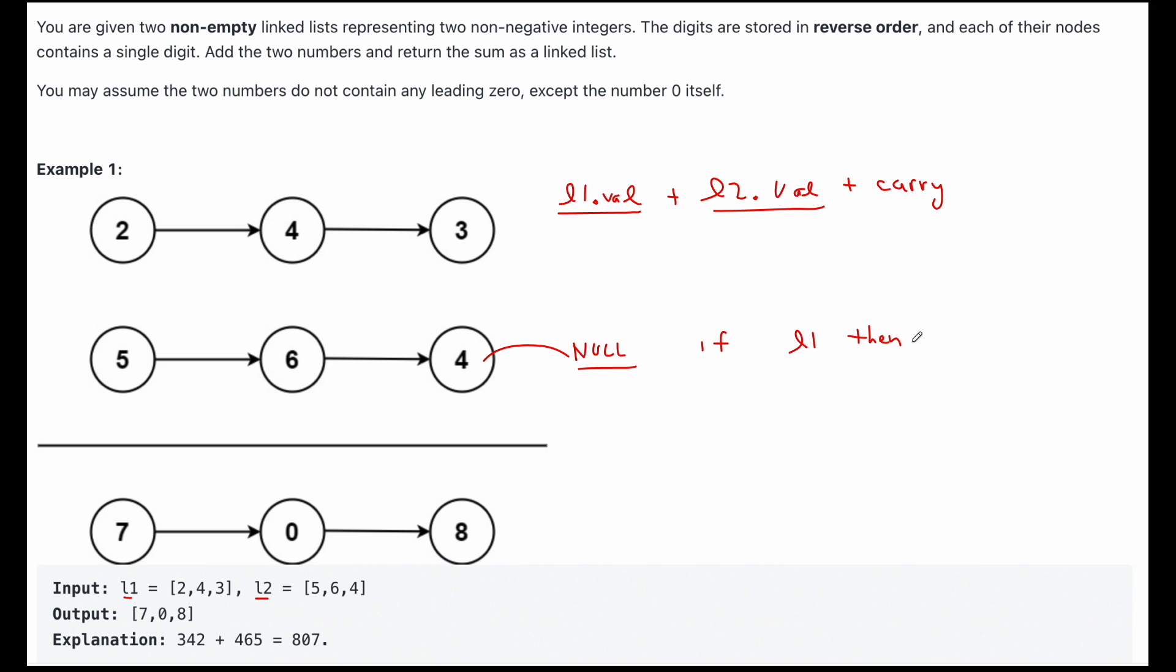So we'll say l1.val, else we'll just take a zero. Similar to how we were using the index, parsing it if the index was valid, otherwise we were just using zero. And we're going to do that to parse out the entire list here.